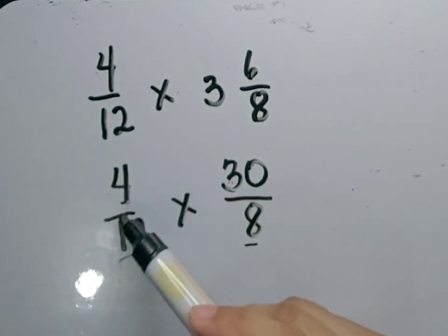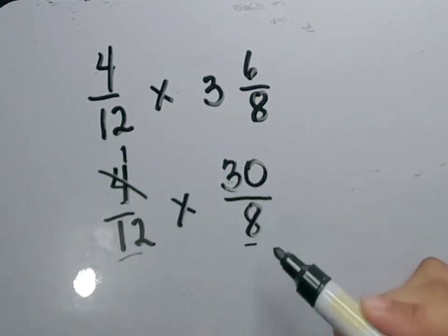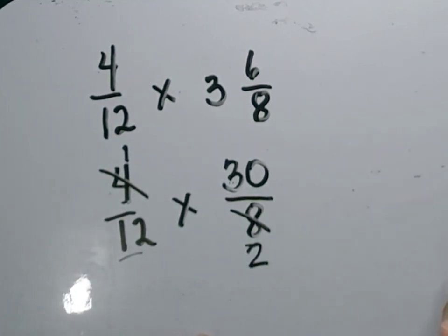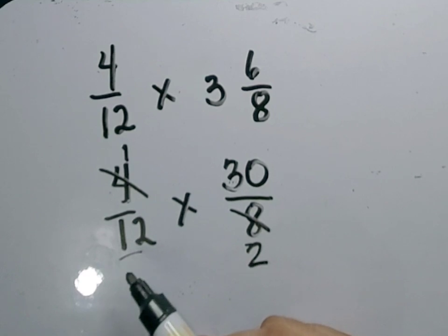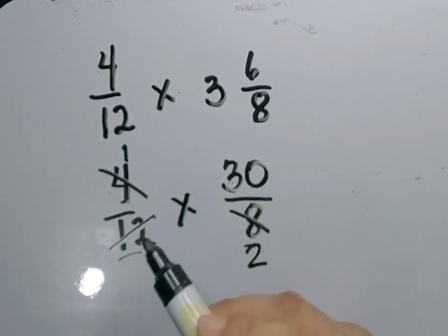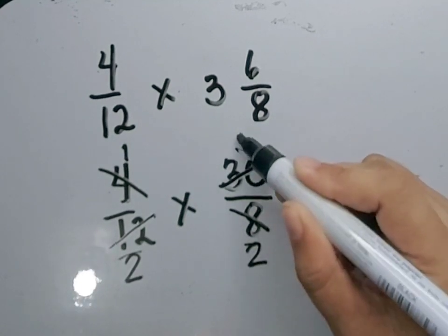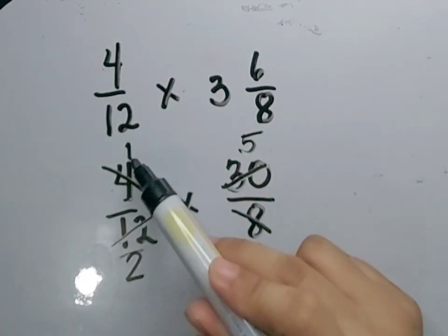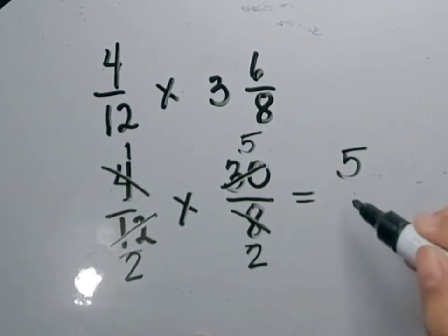4 divided by 4 is equal to 1. Let's cancel 4 — it will become 1. 8 divided by 4 is equal to 2. Cancel 8 and make it 2. The other set is 12 and 30. So let's divide 12 and 30 by their GCF, 6. 12 divided by 6 is equal to 2. 30 divided by 6 is equal to 5. Next, let's multiply the numerator by the numerator and the denominator by the denominator. 1 times 5 is equal to 5. 2 times 2 is equal to 4.